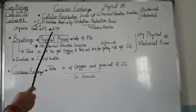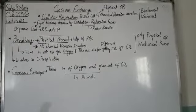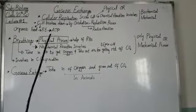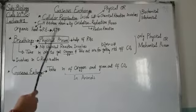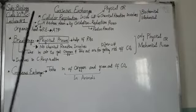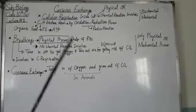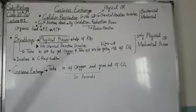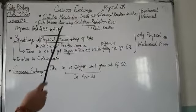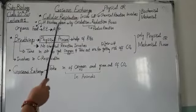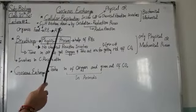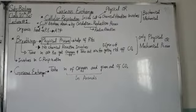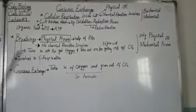ATP is adenosine triphosphate. It is an ATP molecule with 3 phosphate molecules. We have energy stored in the phosphate bonds, and these phosphate bonds provide energy for our daily cellular functions.